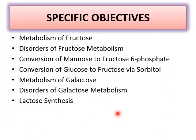In part one of metabolism of monosaccharides and disaccharides other than glucose, we have covered metabolism of fructose, disorders of fructose metabolism, conversion of mannose to fructose 6-phosphate, and conversion of glucose to fructose via sorbitol. In part two we will be completing the remaining topics. Thank you.